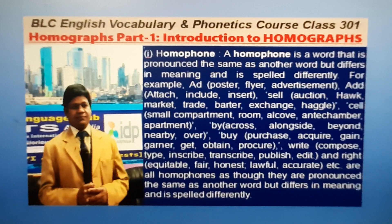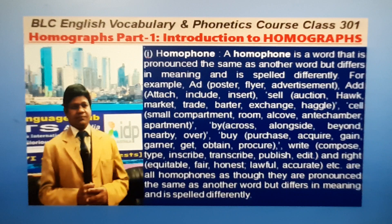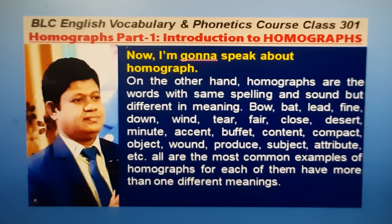A homophone is a word that is pronounced the same as another word but differs in meaning and is spelled differently. For example: AD meaning poster, flyer, advertisement; and ADD meaning to include, insert. SELL meaning auction, market; and CELL meaning small compartment, room, alcove, apartment, etc. BY meaning across, beyond, over; and BUY meaning purchase, acquire, gain, obtain, procure. WRITE meaning compose, type, inscribe; and RIGHT meaning equitable, fair, honest; second meaning: lawful, etc. — are all homophones, as they are pronounced the same as another word but differ in meaning and are spelled differently.